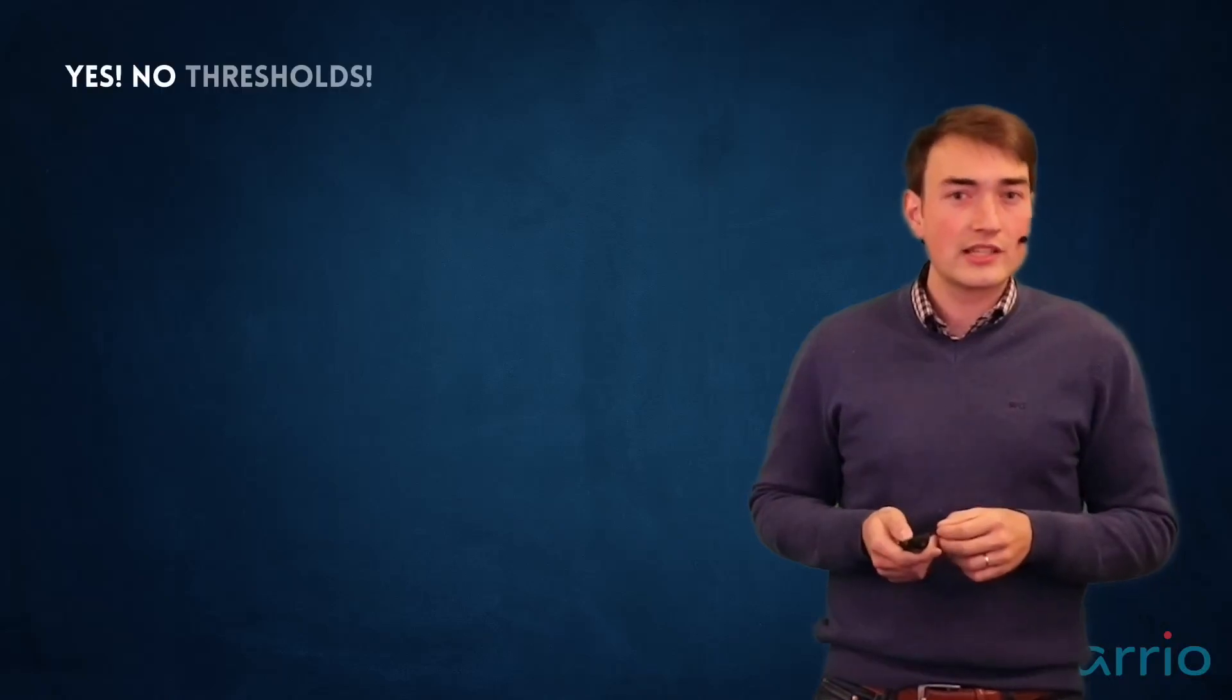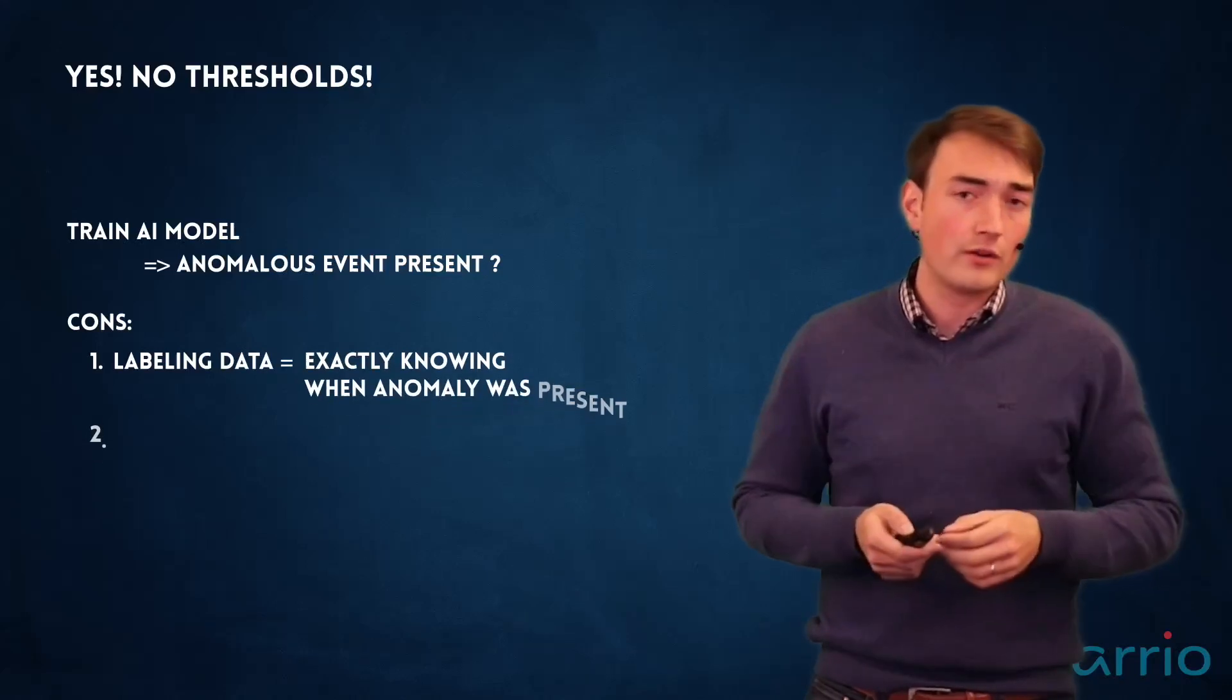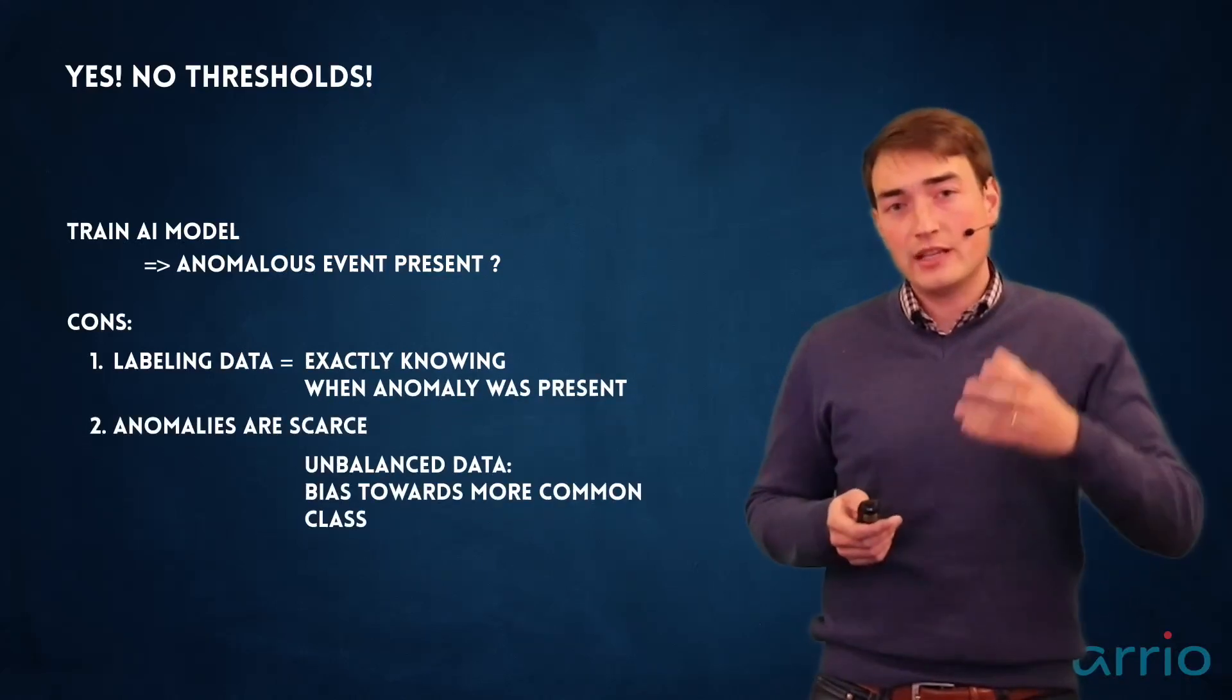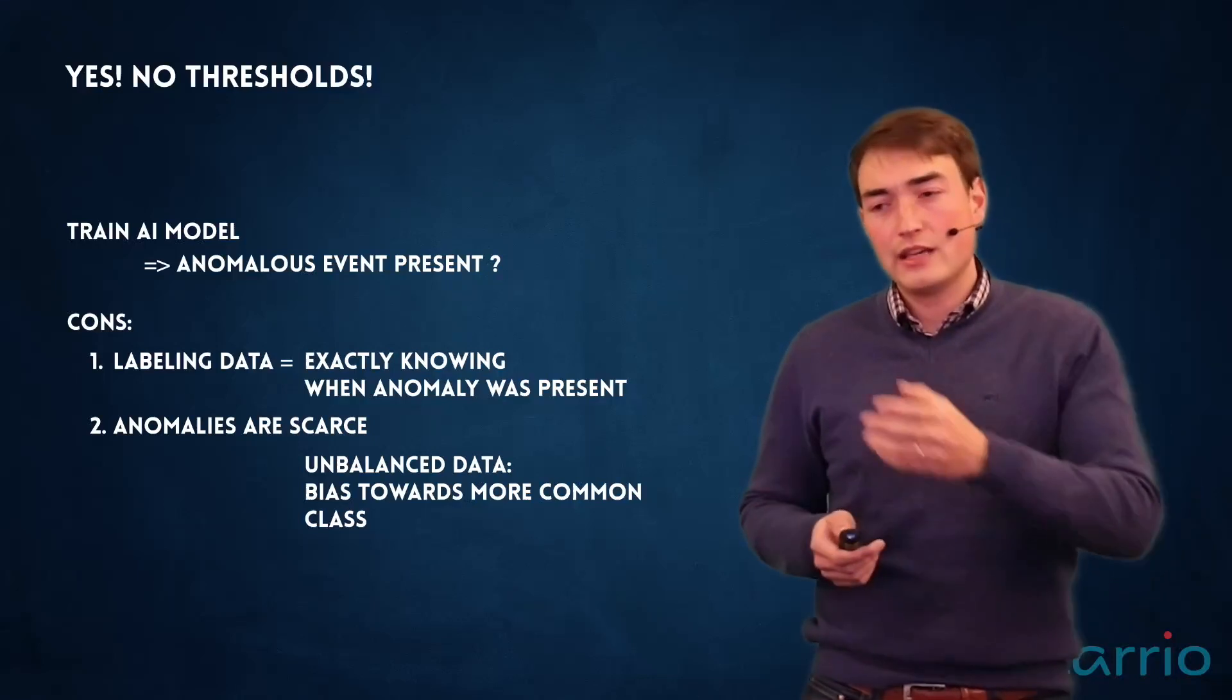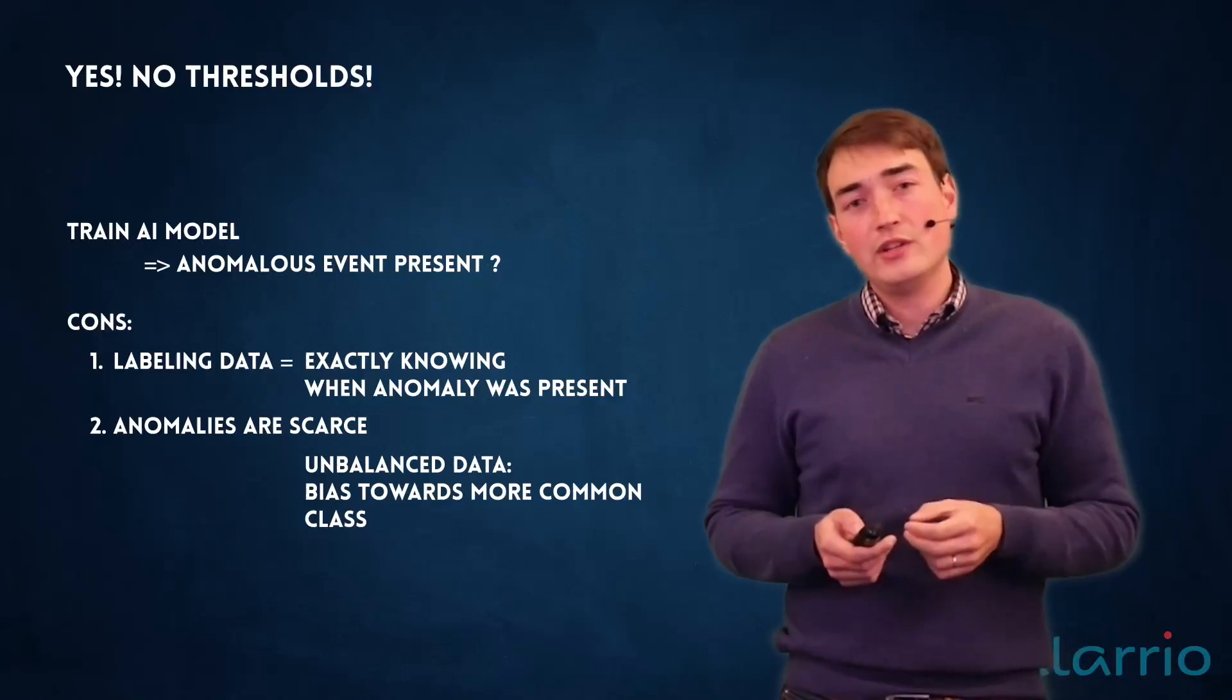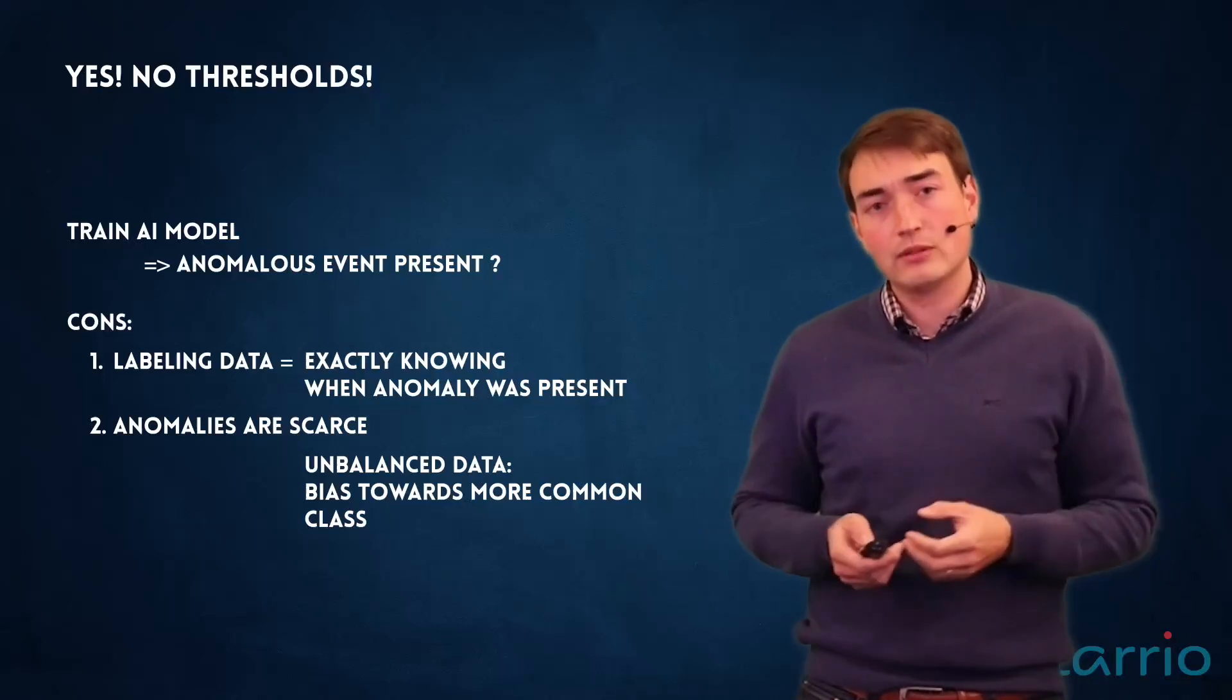Well, yes there is. We can build, for instance, a neural network or a machine learning algorithm that states based on a training of historical data if there is an anomalous event, yes or no. The problem with that is you need a lot of labeled data. We have a lot of data